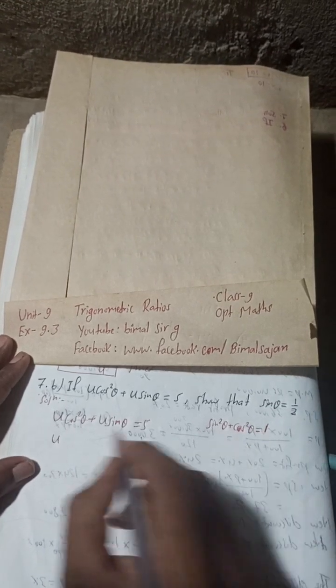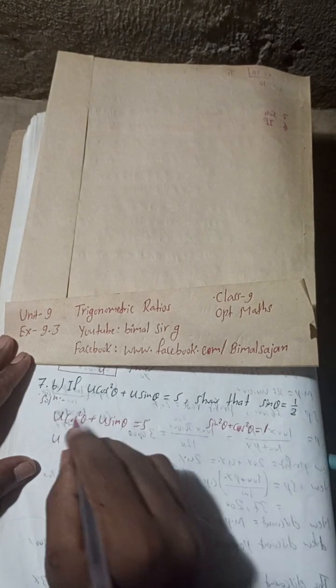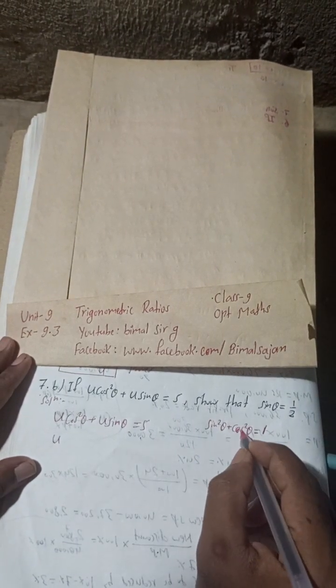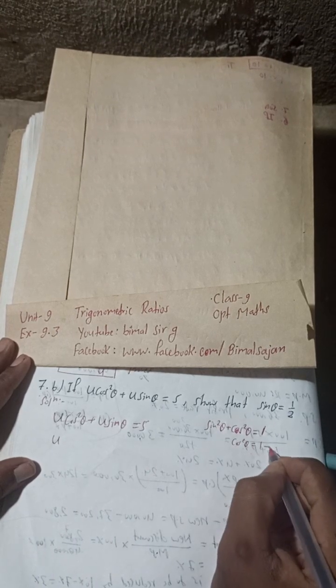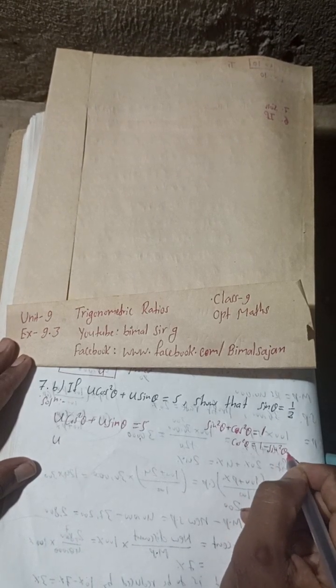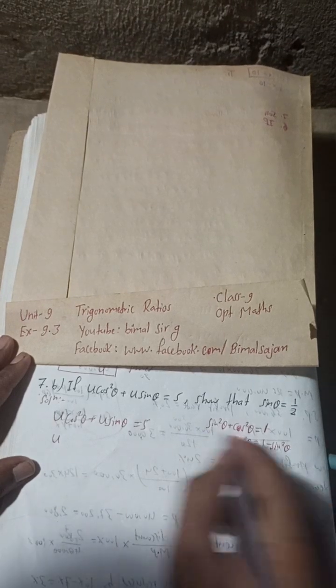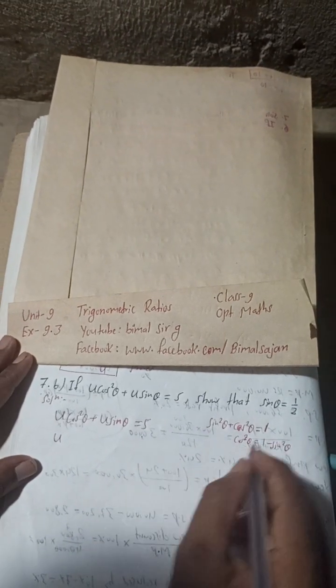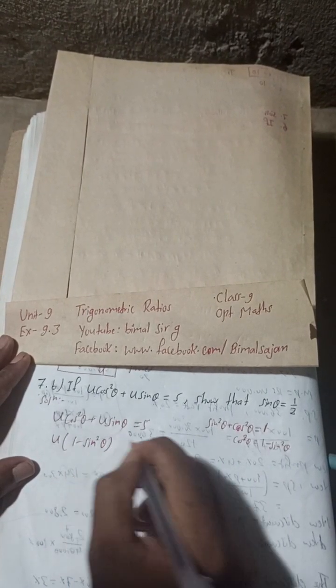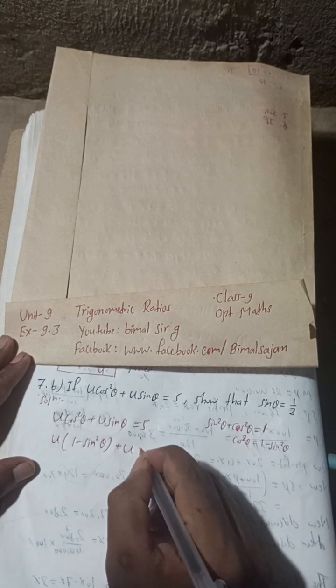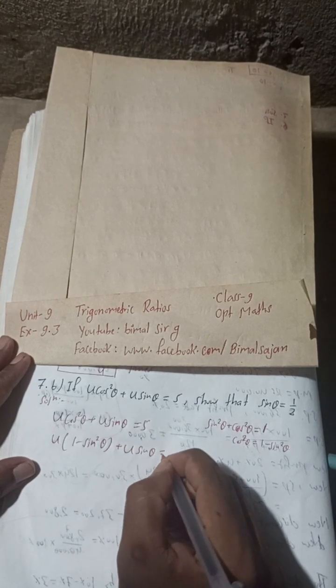So this cos²θ can be written as 1 - sin²θ. Therefore: 4(1 - sin²θ) + 4sinθ = 5.